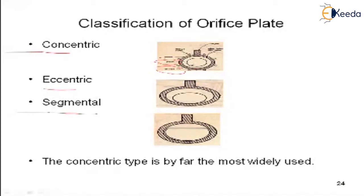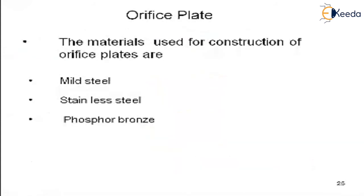In the concentric type, there is a small hole to avoid air pockets. The orifice center and the air pocket hole have a distance between them — that is why it is called concentric. In the eccentric type, the air pocket hole is touching the edge. In the segmental type, the openings are bisecting and overlapping. Among these three types, the concentric type is most commonly used.